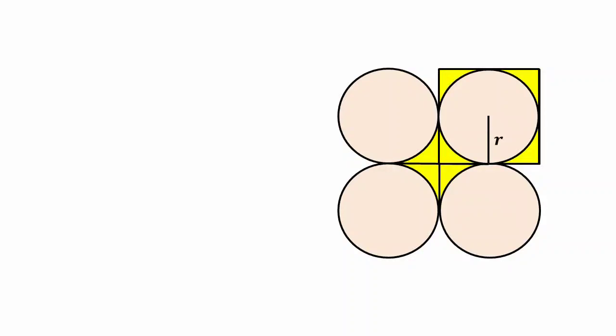Let the radius of the circle be r, then the side of the square will be 2r. So, area of the square is 4r² and area of the circle is πr².